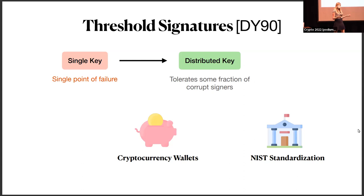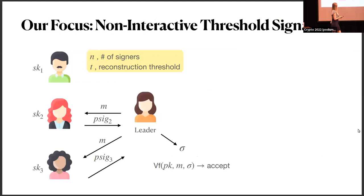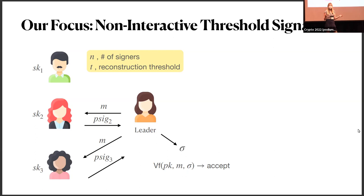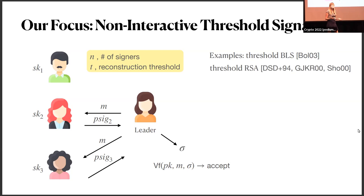Threshold signatures are being used to secure cryptocurrency wallets. Threshold cryptography is being standardized through NIST, as well as specific schemes like FROST. In this work, we focus on non-interactive threshold signatures. Consider an example where two out of three parties are required to sign. With a user called the leader in a fully non-interactive scheme, the leader sends a message to the two signing parties, who each form a partial signature and send it to the leader. The leader then aggregates these into a final signature representing the group.